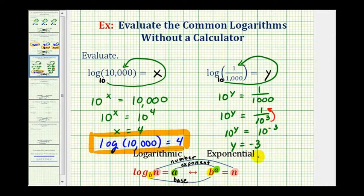Therefore, y equals negative 3. Since y equals negative 3, the original common logarithm equals negative 3. The common log of 1/1,000 equals negative 3.